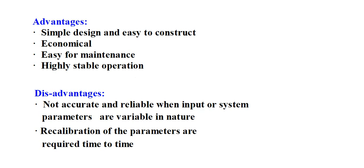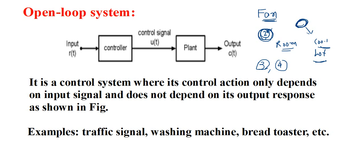The disadvantages of open loop system are: it is not accurate and reliable when input or system parameters are variable in nature. Recalibration of parameters is required from time to time. If we are using a control system like a fan for a long time, maintenance of the system is required periodically, otherwise problems may occur. The block diagram shows that control action does not depend on output, only on input.